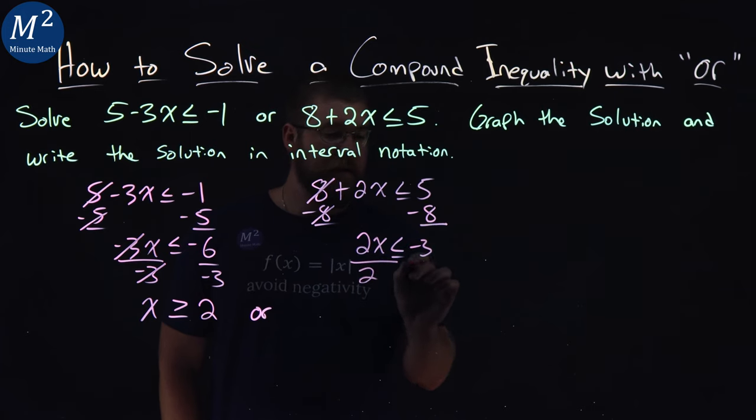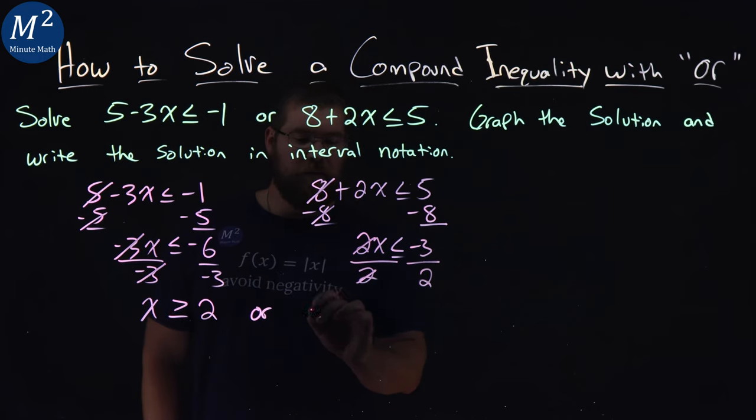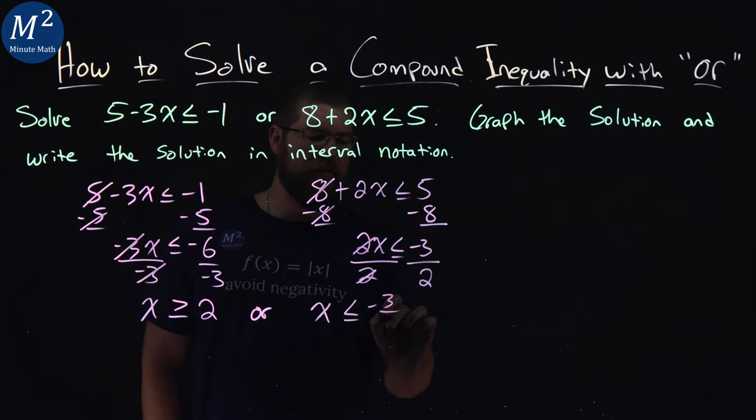We divide both sides by 2 here. 2s cancel on the left, x is by itself, we'll put it here, is less than or equal to, and negative 3 over 2 is just negative 3 halves.